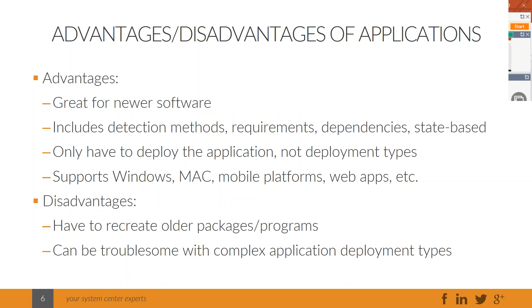That's one reason Microsoft went to the Application Model in ConfigMgr 2012. It's great for MSIs — a fantastic way to deploy software. One cool advantage over packages and programs is detection methods. With packages and programs, the site server doesn't know if a client has already installed the software you're deploying. With applications, you just deploy to a collection and only computers that don't already have the software installed will try to install it, through detection methods — some are built-in like MSI, others you create yourself.